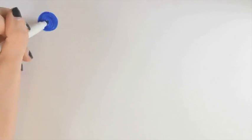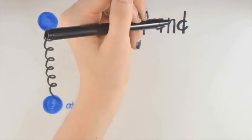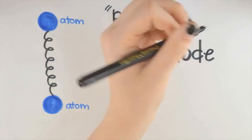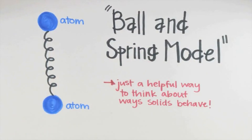So, picturing the chemical bond as a spring acting between two atoms, in what's known as the ball and spring model, where the atoms are the balls, is a common way to think about solids at the atomic scale.